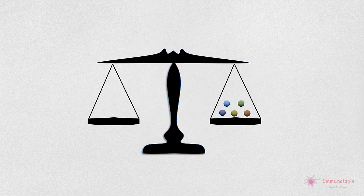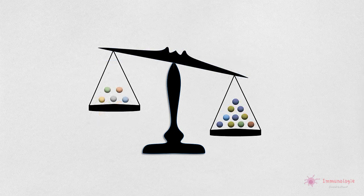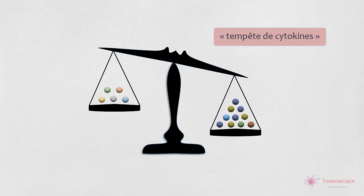Il existe également les cytokines dites anti-inflammatoires, qui peuvent résoudre l'inflammation et les dommages collatéraux aux cellules, tels que TGF-bêta et l'interleukine 10. Cependant, dans certaines circonstances pathologiques extrêmes, une surproduction massive et une dérégulation des cytokines produisent une hyperstimulation de la réponse immunitaire, une condition communément appelée tempête cytokinique, qui peut entraîner un choc, une défaillance multiviscérale ou même la mort.